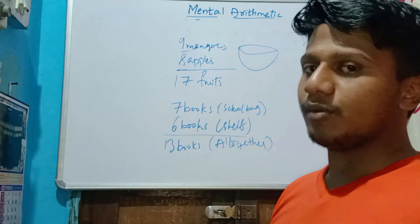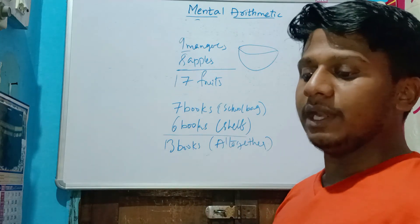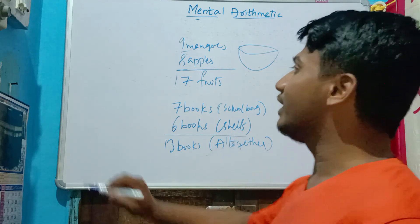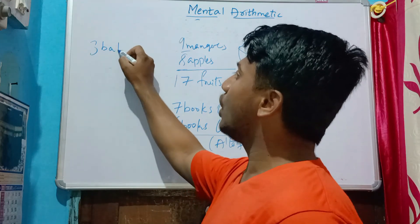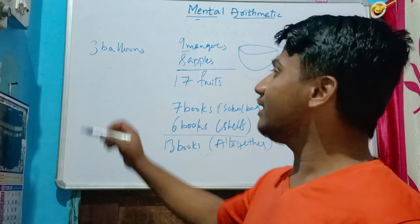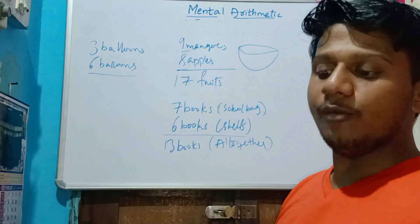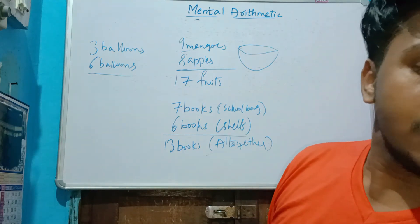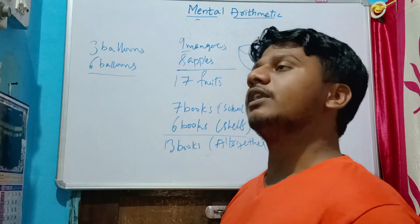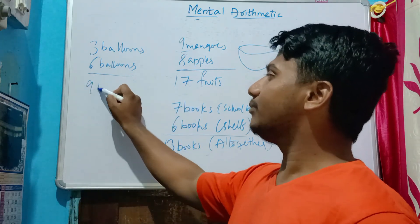There are three more problems — I'll do one more and the remaining two are homework for you. A balloon seller holds three balloons in his right hand and six balloons in his left hand. How many balloons in all? Three plus six — after three: four, five, six, seven, eight, nine. Totally nine balloons.